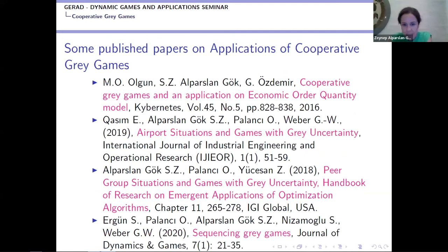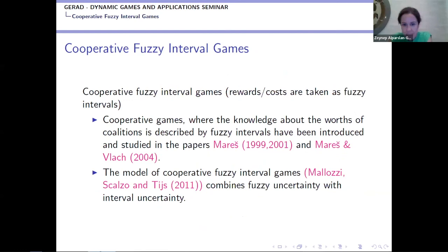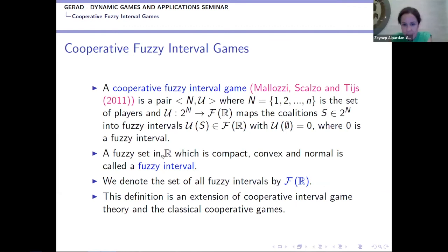For fuzzy interval games, the foundational work was started by Lina Malozzi, Scalzo, and Tijs for the fuzzy idea of cooperative games, and there also exists literature on cooperative fuzzy games by Mares and Vlach. In our case, we take the values of the coalitions as fuzzy intervals — a set in R that is compact, convex, and normal. I have tried to publish some papers on this topic and am still continuing this work.